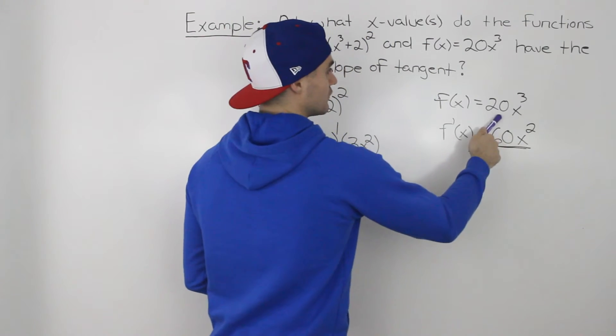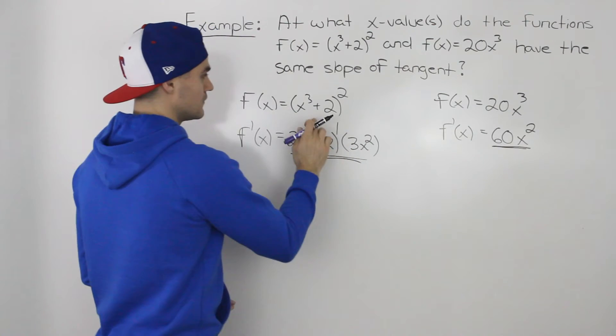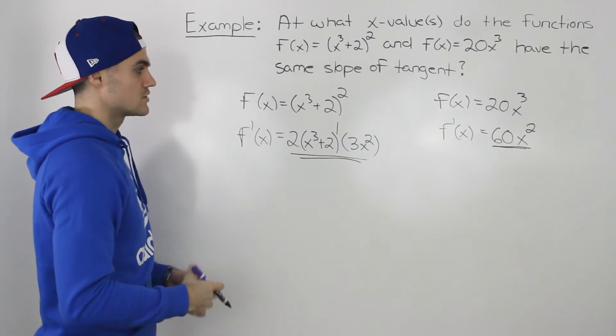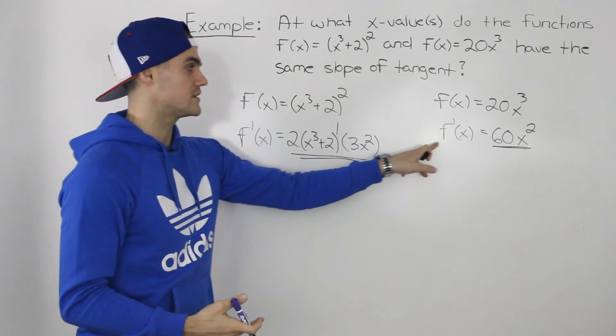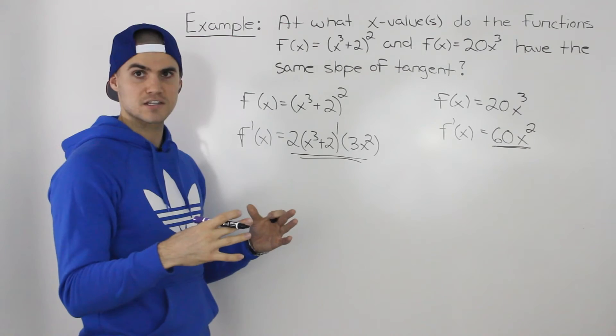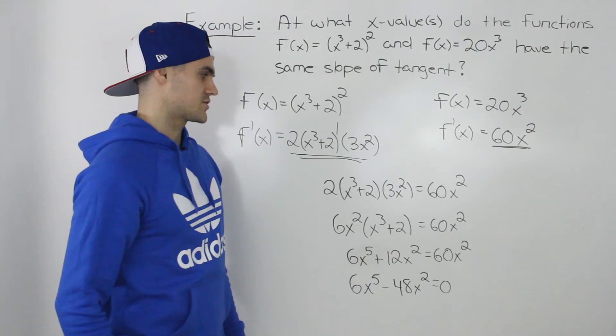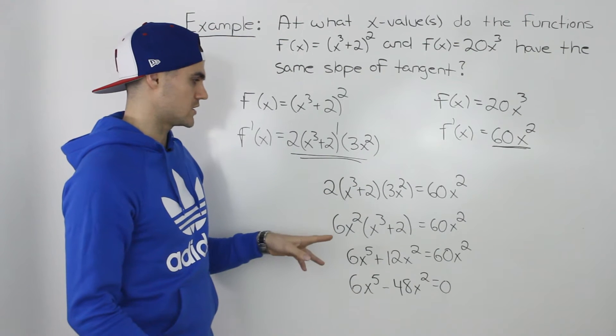So 60x² is the derivative of this function and then this whole expression here is the derivative of this function. So now we can make both of these derivatives equal and then solve for x. At those x values, the slopes of the tangent will be equal for these two functions. Making those derivatives equal,